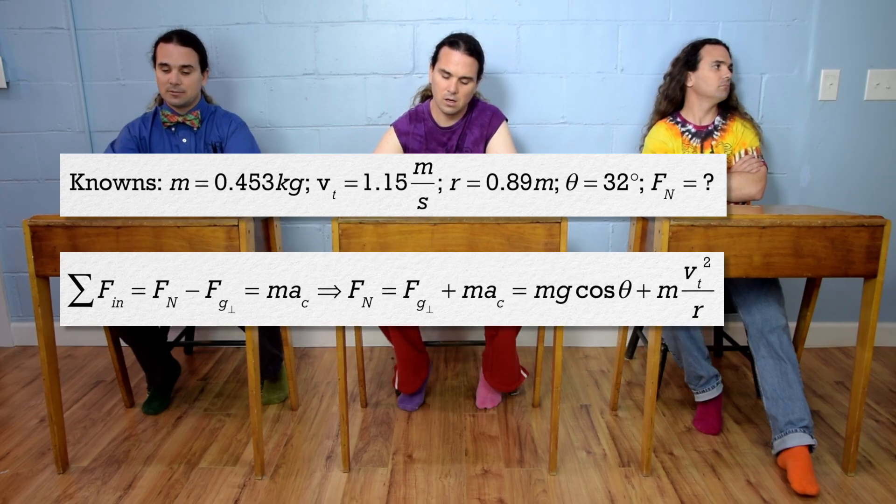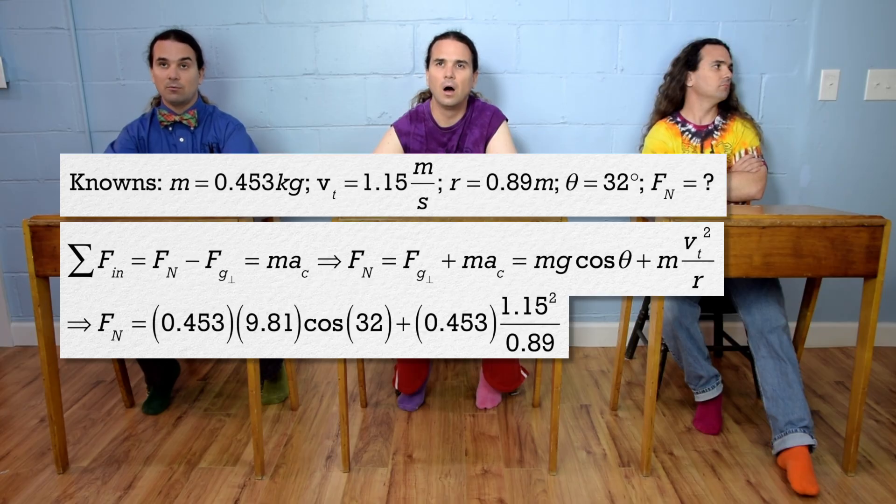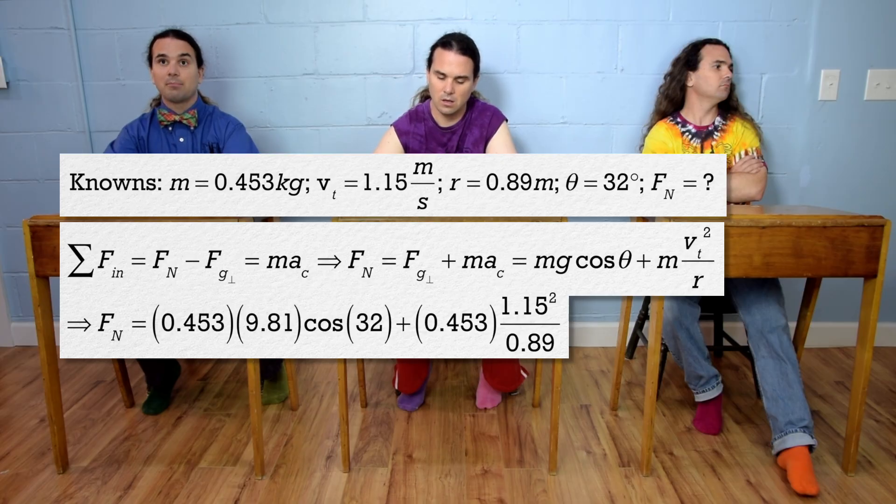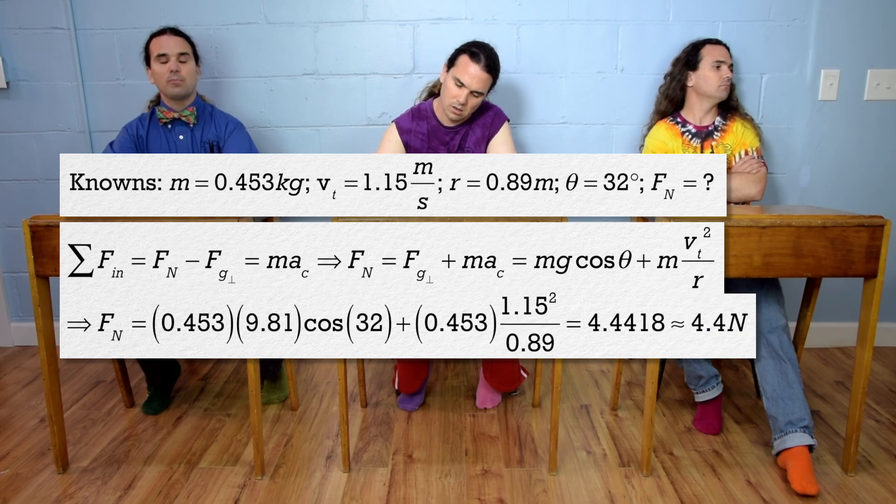Next, let's plug in numbers. So that's 0.453 times 9.81 times the cosine of 32 degrees plus 0.453 times 1.15 squared divided by 0.89, which equals 4.4418 or 4.4 newtons with two significant digits.